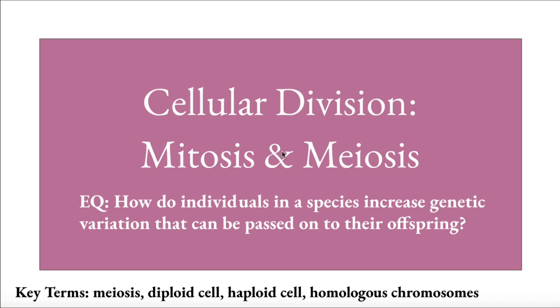This allows species to survive threats. If everyone has the same genetic makeup and components with no variation, they run the risk of a single threat taking out the entire species. By the end of this lesson, you should be comfortable with the key terms of meiosis, diploid cell, haploid cell, and homologous chromosomes.